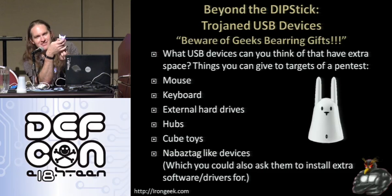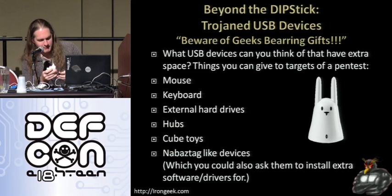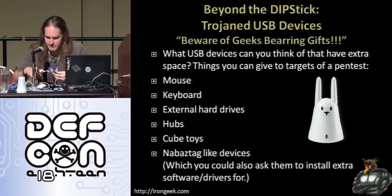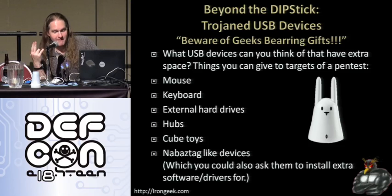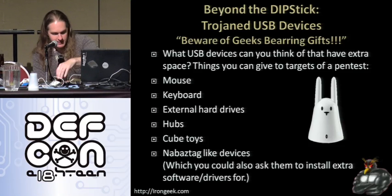I can make the eyes change different colors based on what's going on in the computer system, but to do that I need extra software installed. So when you're socially engineering someone to install these things, you can say, 'I got this cool desktop toy for you. It does extra things for your computer but you've got to install this extra software along with it.' Social engineering with trojan devices — or as I would say, beware of geeks bearing gifts — is another option.